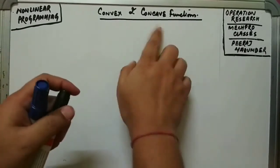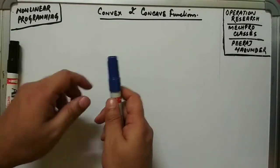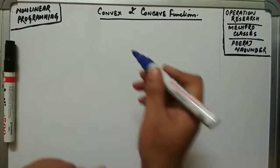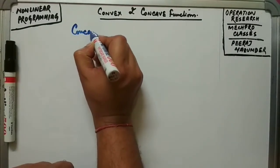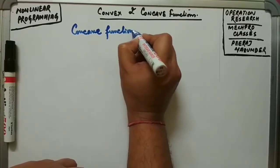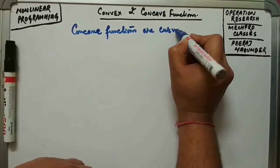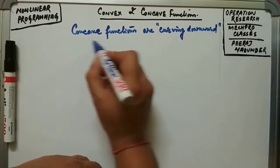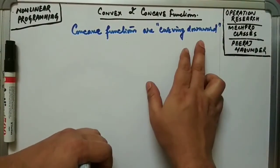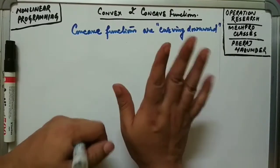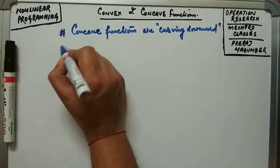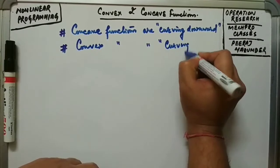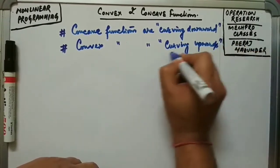We must know what concave and convex functions are, basically in relation to graphical representation of linear or nonlinear ones. Concave functions are curving downward or not curving at all. Convex functions are curving upwards or not curving at all. These two terms are very important.